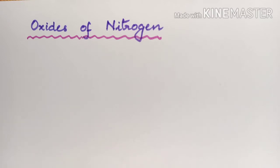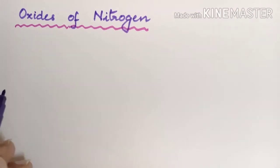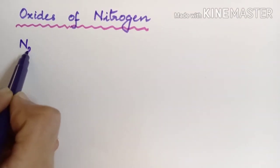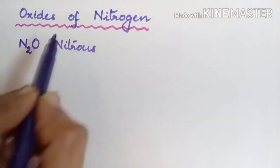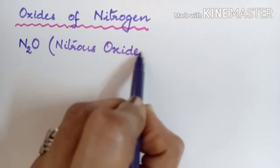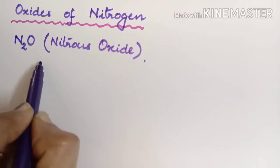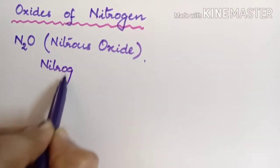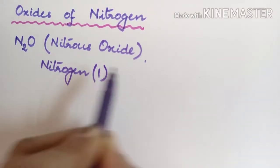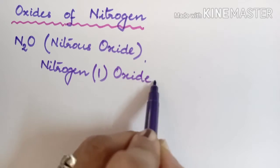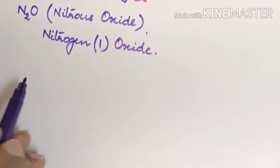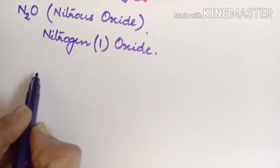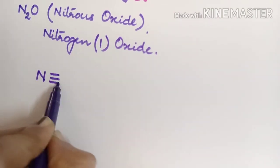In this video we will be discussing about oxides of nitrogen. The first compound is N₂O, which is known as nitrous oxide. It is also having the IUPAC name nitrogen(I) oxide, commonly known as laughing gas. It has a structure with N triple bond N.